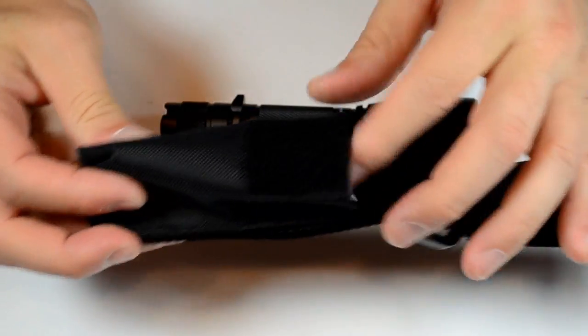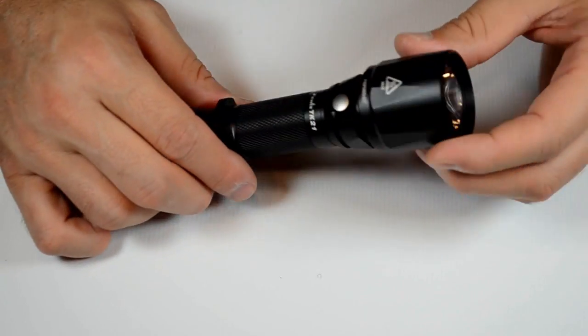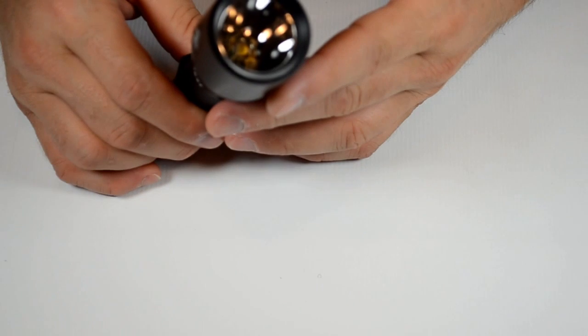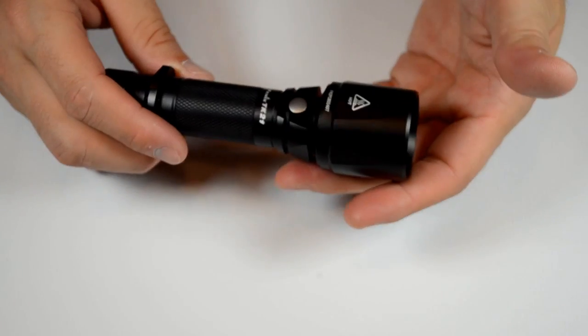The light itself has an XML in it from Cree and a smooth reflector, so this thing is a thrower. It has a forward clicky on it which turns the light on.